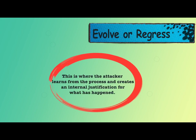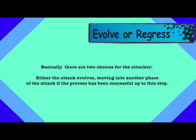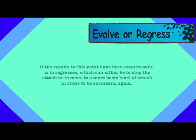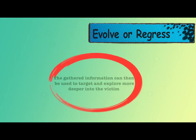The sixth and final step of the social engineering attack cycle is evolve or regress. The attacker learns from the process and creates an internal justification for what has happened. There are two choices: either the attack evolves, moving into another phase if the process has been successful, or if the results have been unsuccessful, the attacker can stop the attack or move to a more basic level. The gathered information can then be used to target and explore more deeply into the victim until the attacker convinces the target to divulge the information needed to achieve the goal.